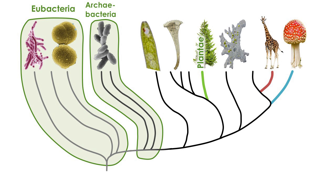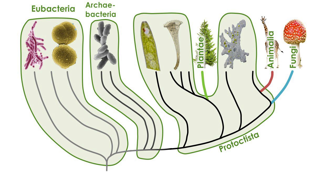The super kingdom Eukaryota is divided into four kingdoms: the plants in the kingdom Plantae, the Animalia or animals, and the Fungi, which contains the mushroom-producing fungi and their relatives like molds and yeasts. All the other eukaryotes that are not part of Plantae, Animalia, or Fungi are together classified as the fourth kingdom, the Protoctista — sometimes called Protista or protists. The classification of life into the six kingdoms is a poor reflection of the evolutionary relationships in the tree of life, but for the purpose of this video, that is to show you the diversity of life, it works well enough.